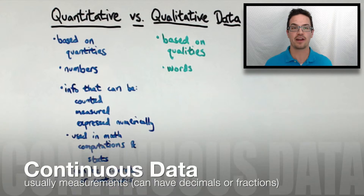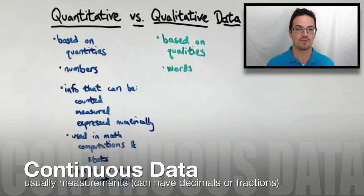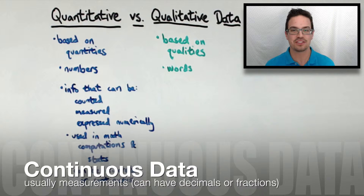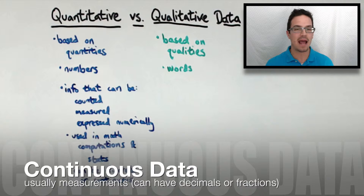Continuous data, on the other hand, can have fractions and decimals. These tend to be based on measurements such as height, age, weight, mass, density, volume — things like that.